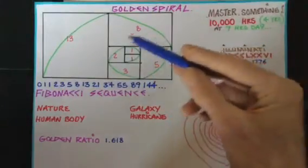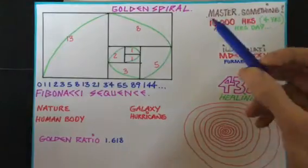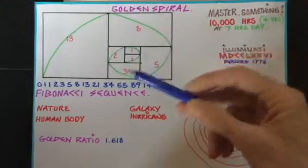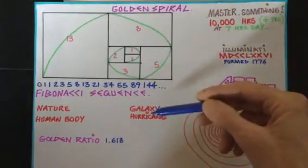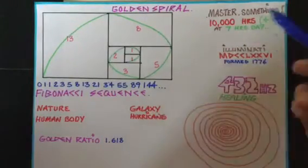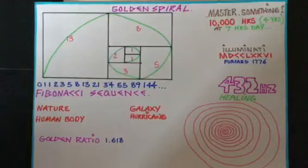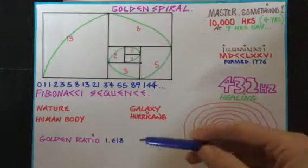Now this golden spiral is everywhere. Galaxies—you'll see a spiral galaxy we live in. Hurricanes, a spiral. Water leaving the tap, always in a spiral shape. And also off the back of the spiral, it will produce the ratio of golden ratio of 1.618.